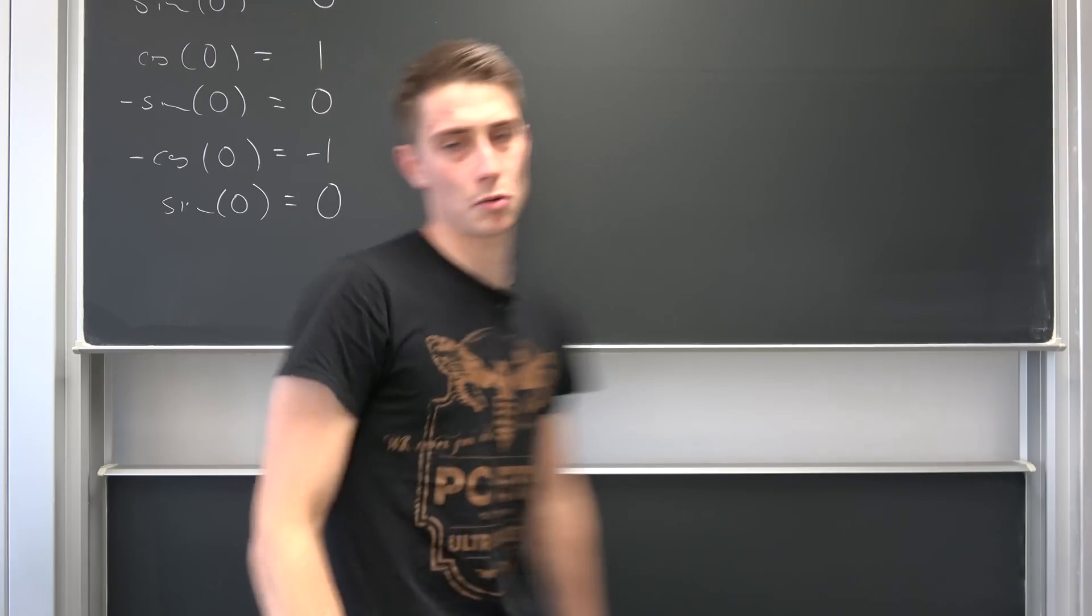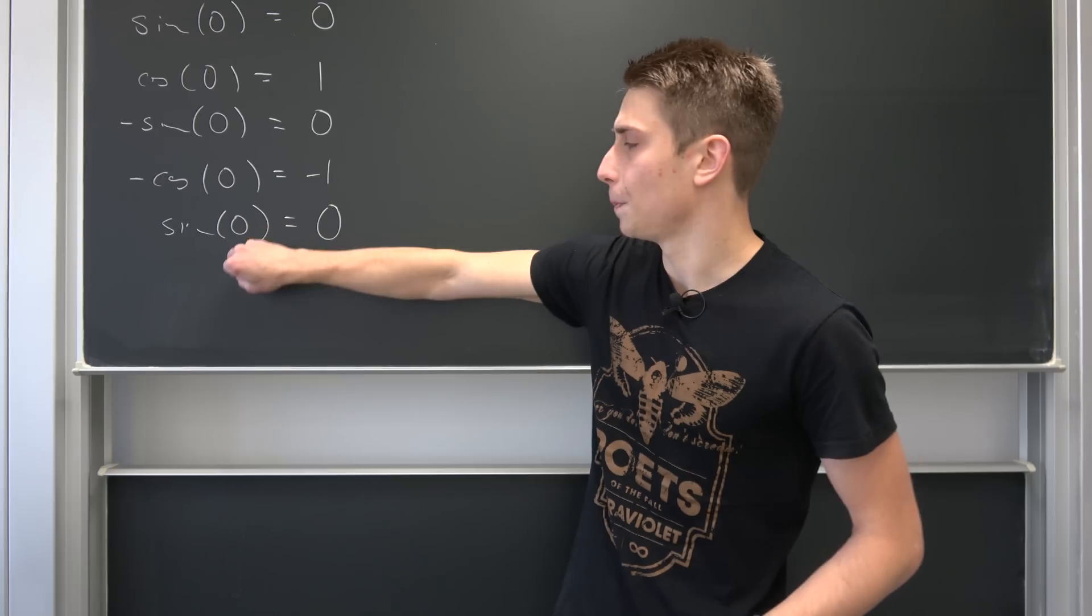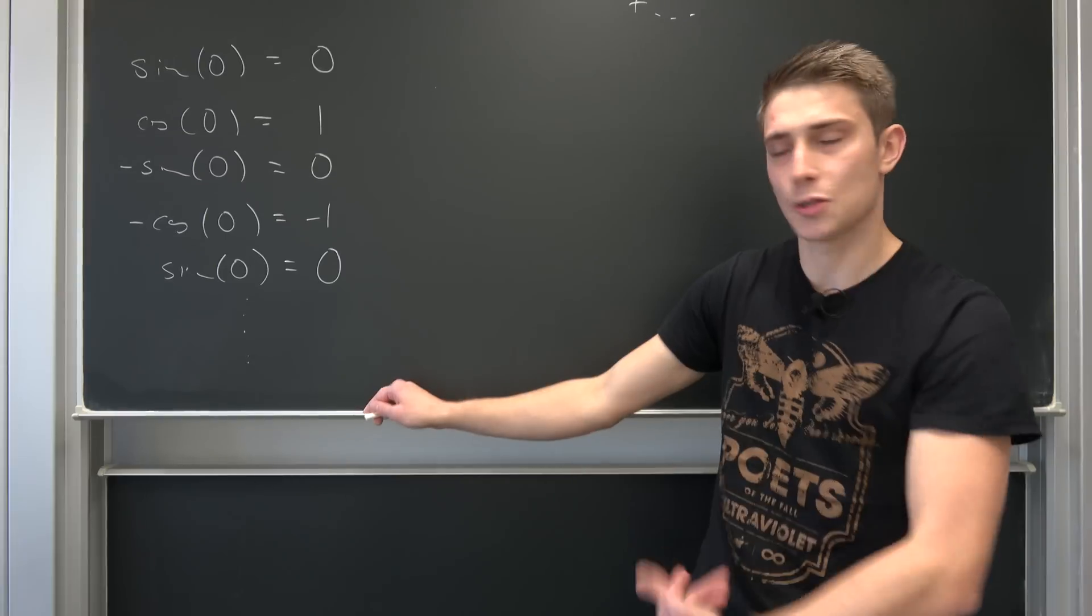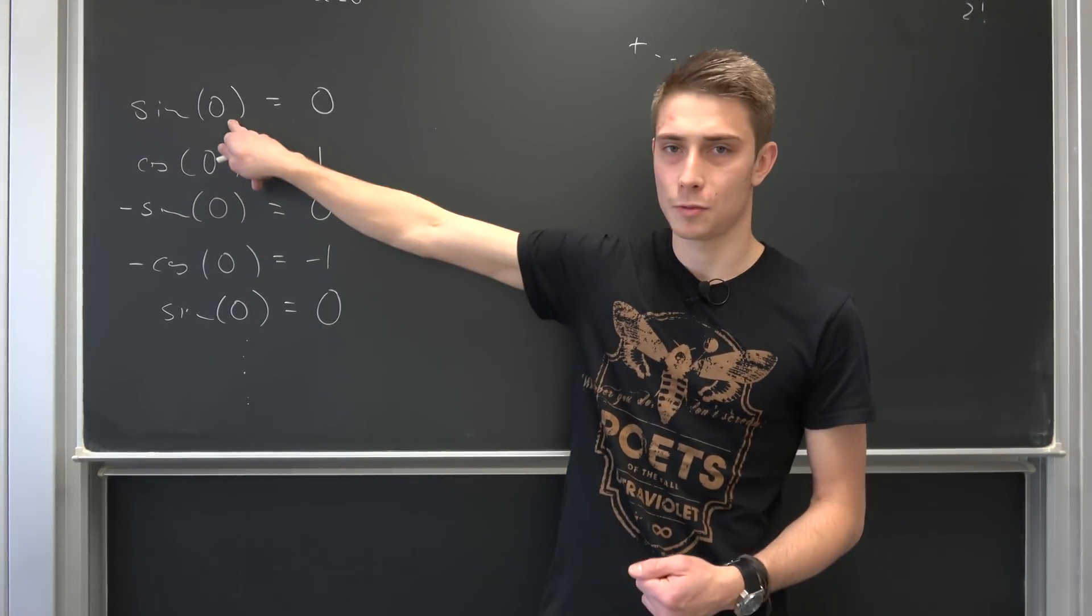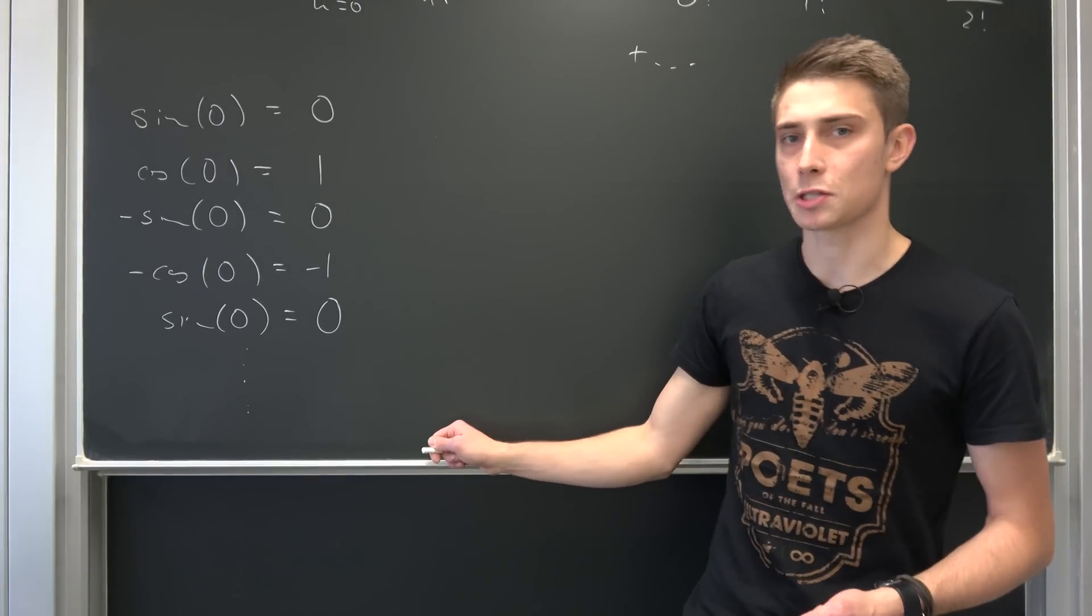So the derivative of negative cosine is just the sine evaluated at zero, which is once again zero. And you see we are going to start off this circle once again, this argument. So we are going in circles basically. We started off with the sine, ended up with the sine, and we can move on like this. So you see we can find a certain pattern.